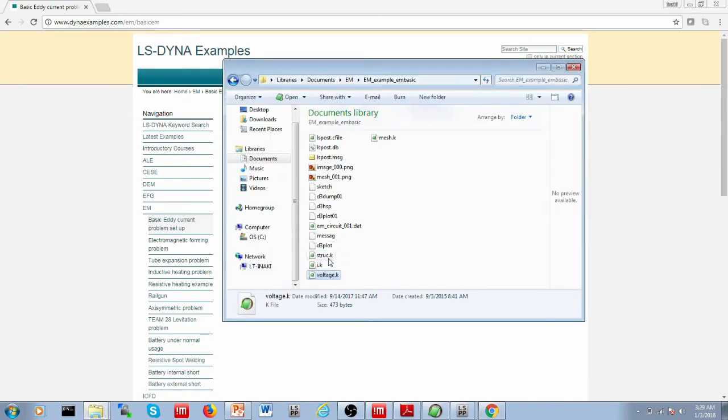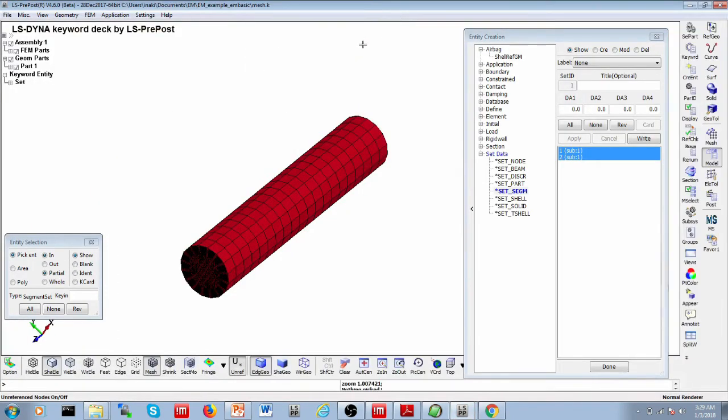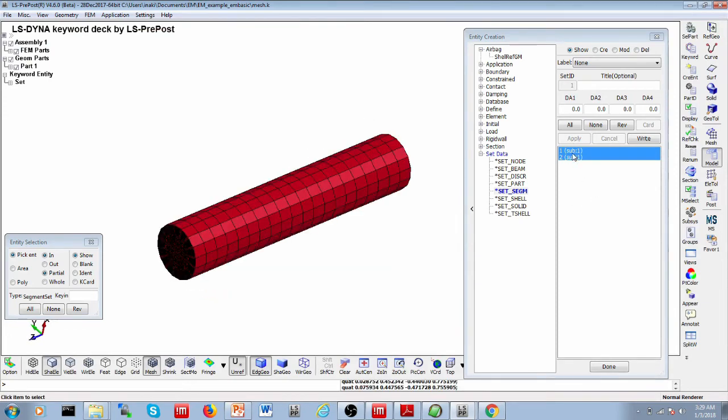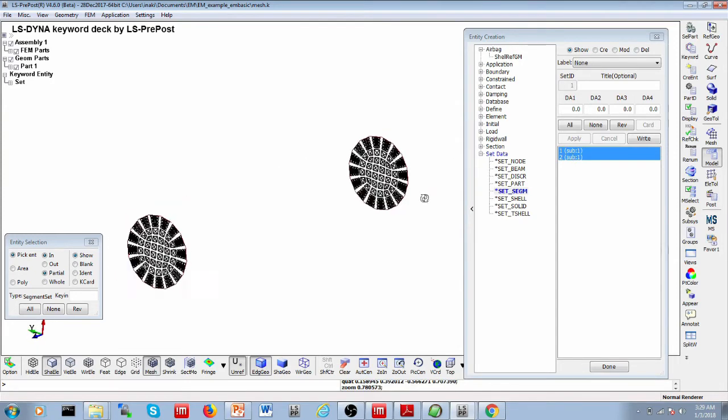There's four of them, structure.k, voltage.k, mesh.k, and then i.k. If you look at the mesh.k file, if you open it in LS Prepost, for example, you will see that it's our simple rod there, and our two segment sets, one and two, which have been defined on the two outlets.